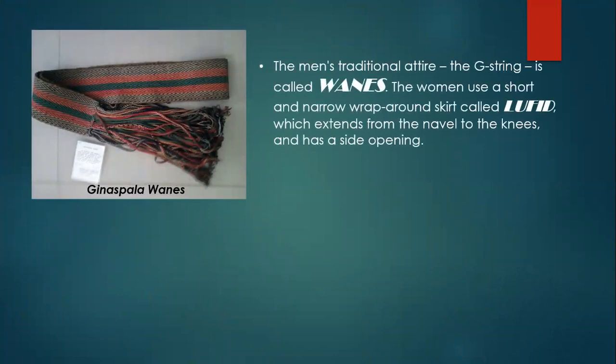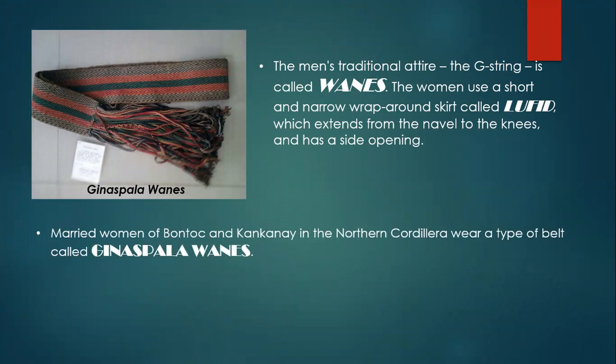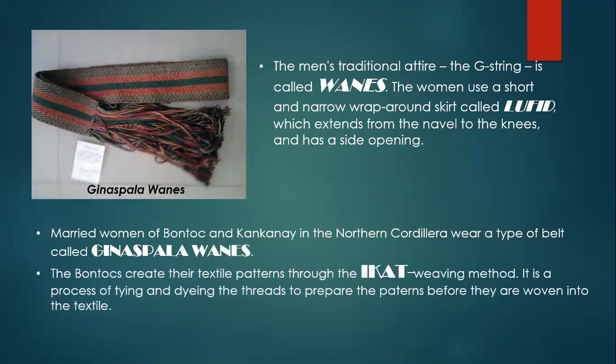The men's traditional attire, the G-string, is called wanes. The women use a short and narrow wrap-around skirt called lufid, which extends from the navel to the knees and has a side opening. Married women of Bontoc and Kankanaey in the northern Cordillera wear a type of belt called Ginas Pala wanes. The Bontocs create their textile patterns through the ikat weaving method — a process of tying and dyeing the threads to prepare the patterns before they are woven into the textile.